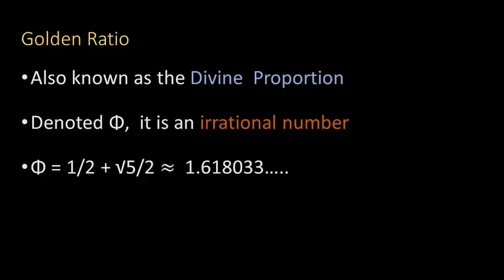Let's start with a word which I'm sure many of you have heard — this is called the golden ratio. It's also called the divine proportion. In mathematics, it's denoted by the symbol phi. For those of you who know a little about numbers, it's an irrational number, which means it cannot be expressed as a fraction. When you express it as a decimal, it continues forever without any pattern being repeated. The value is 1 plus square root of 5 over 2, and its approximate value is 1.618033, and that number goes on.